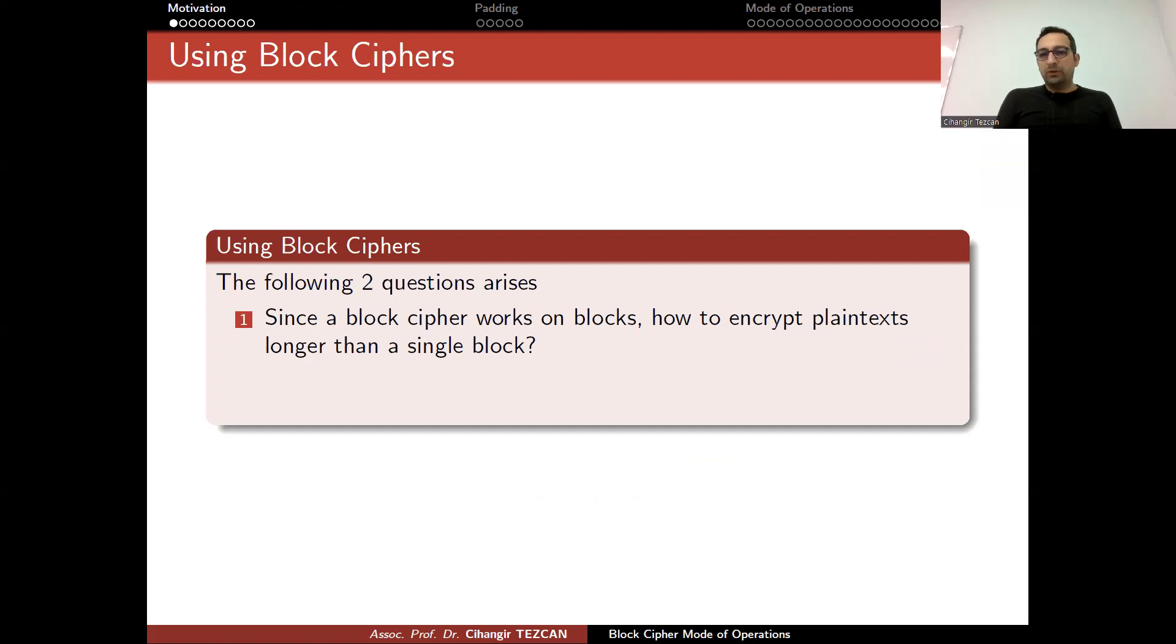Since a block cipher works on blocks, how to encrypt plaintexts longer than a single block? For instance, consider AES. It has 128-bit blocks, so it moves 128-bit blocks to 128-bit blocks. But what happens when we have two blocks, 256 bits? So we have to answer this question.